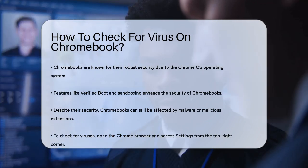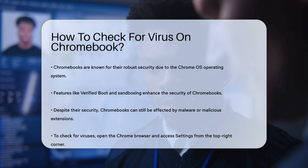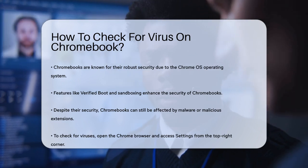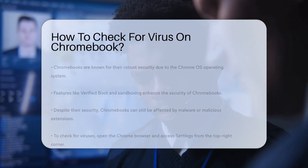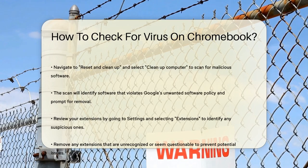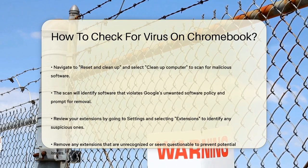To start checking, open your Chrome browser and go to Settings by clicking the three dots in the top right corner. From there, navigate to the Reset and Cleanup section on the left menu and select Cleanup Computer. Click on Find to initiate the scan. This tool will look for any malicious software that doesn't comply with Google's unwanted software policy and prompt you to remove it if any threats are found.